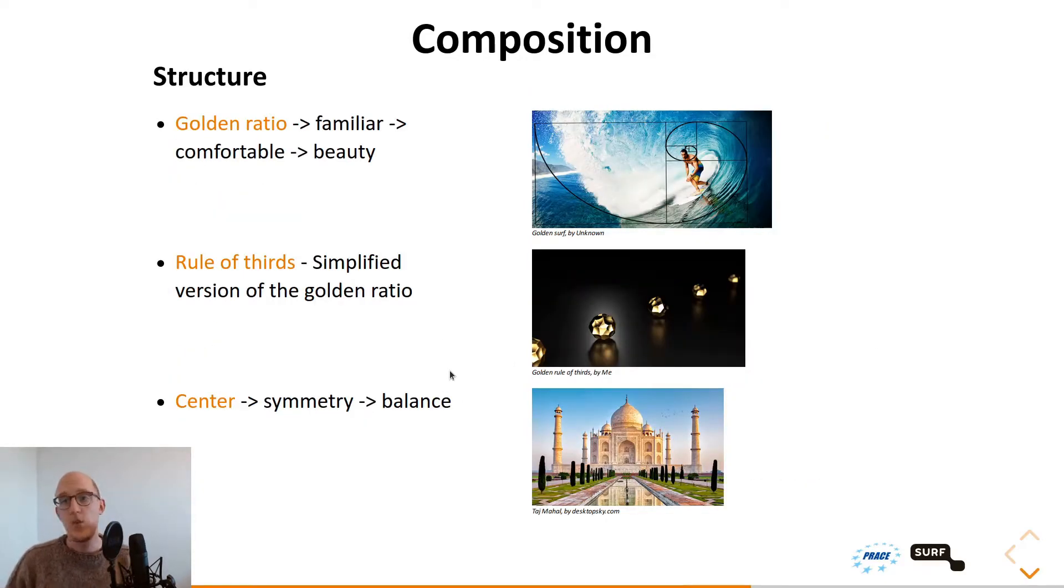And the next component within composition is structure. This is where the focal elements are placed and how the guiding lines are guiding towards the focal points, and basically how the image is structured in general. There are multiple structures. The most famous three are the golden ratio. And why the golden ratio? Because it's familiar, because it comes along in nature a lot. You have the golden ratio in your face and on the body, in nature itself. And that's why it feels comfortable, and comfortable equals beauty. And that's why people think the golden ratio is one of the better compositional structures.